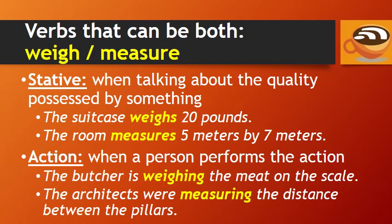Finally, weigh and measure are stative when talking about the quality possessed by something — for example, 'the suitcase weighs 20 pounds,' 'the room measures 5 meters by 7 meters.' They are action verbs when a person performs the action of doing it — for example, 'the butcher is weighing the meat on the scale,' 'the architects were measuring the distance between the pillars.'